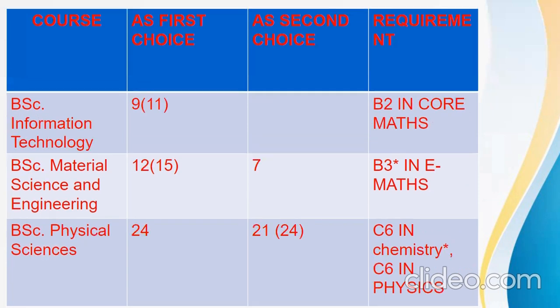BSc Information Technology is 9 as your first choice and 11 as your second choice, with a requirement of B2 in core maths. I had some questions in my inbox asking whether, if you didn't do elective maths, can you still do Information Technology — yes, you can, but note that the cut-off requirement is B2 in core maths. BSc Material Science and Engineering is aggregate 4 for males and 15 for females as your first choice, and aggregate 7 as your second choice, with B2 in elective maths.